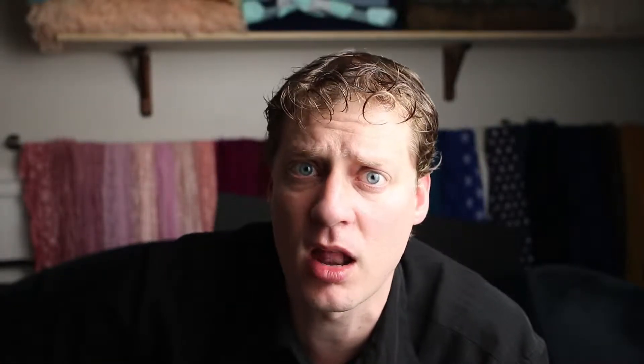Every time we add a predictor to a model, it will always improve the fit — or at least it can't decrease it. So what's to stop us from throwing everything into the model? GPA equals intercept plus high school GPA plus SAT plus SES plus school quality plus height plus weight plus handedness. We could do that, and adding height, weight, and handedness will improve the fit — but there is a cost. That cost is called overfitting. Overfitting means we've fit both the signal and the noise, so some patterns we find are just chance and won't happen again.